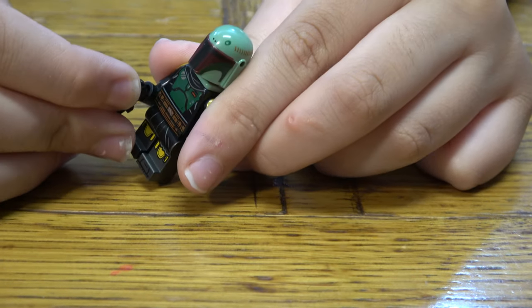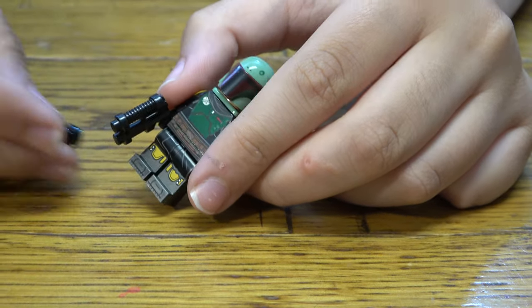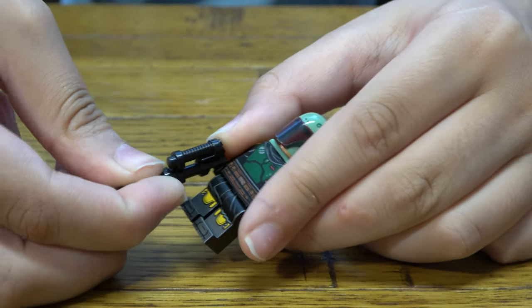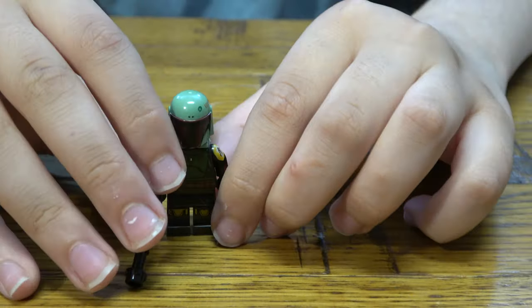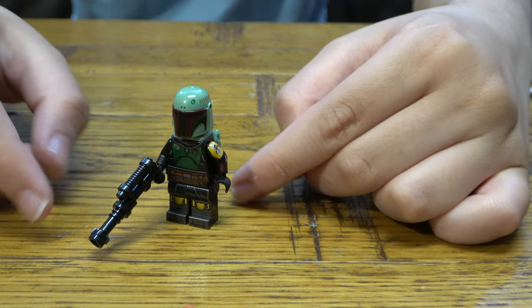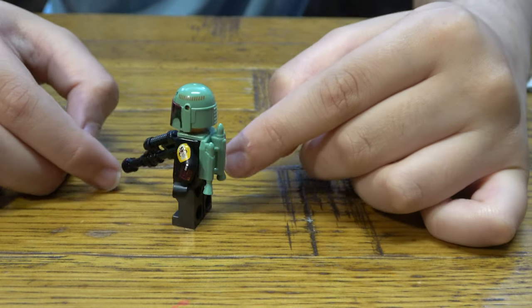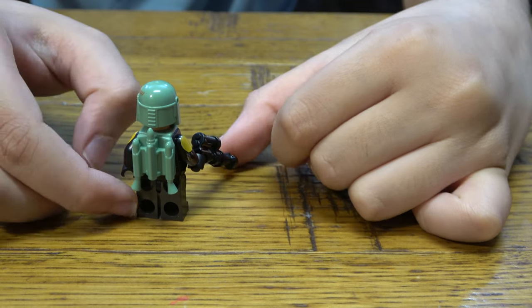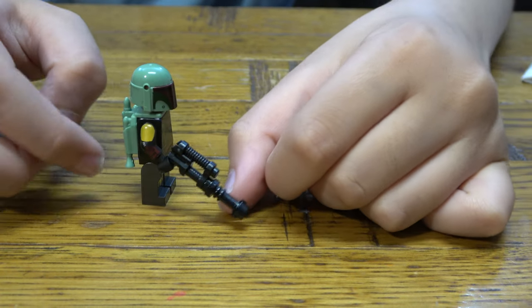And now the blaster gun. So here it is, the finished Boba Fett minifigure guys. Very nice and detailed, and I'm really happy to add this to my collection.